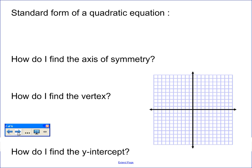Before we get started, we're going to review just a tad. Who remembers what the standard form of a quadratic equation looks like? The definition of the standard form is y equals ax squared plus bx plus c. And we're going to figure out that a, b, and c make a difference as to how the graph looks.